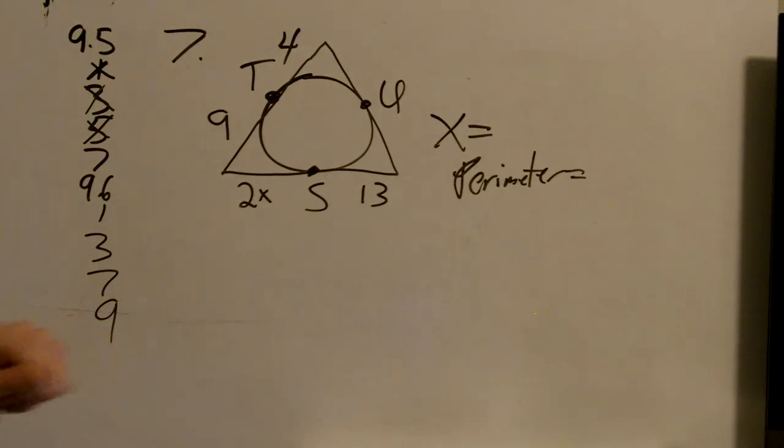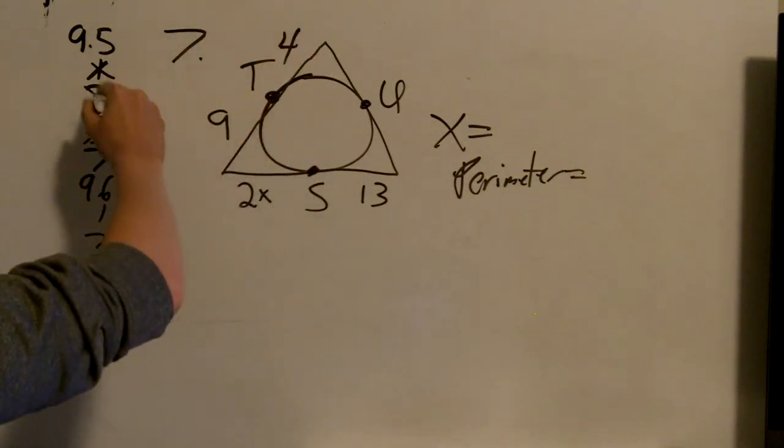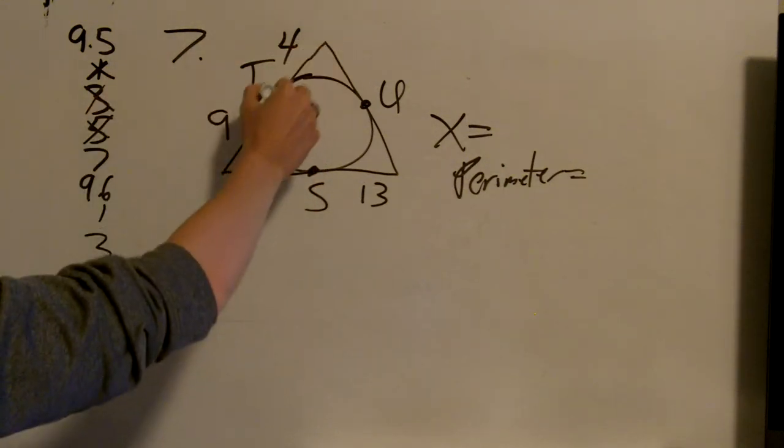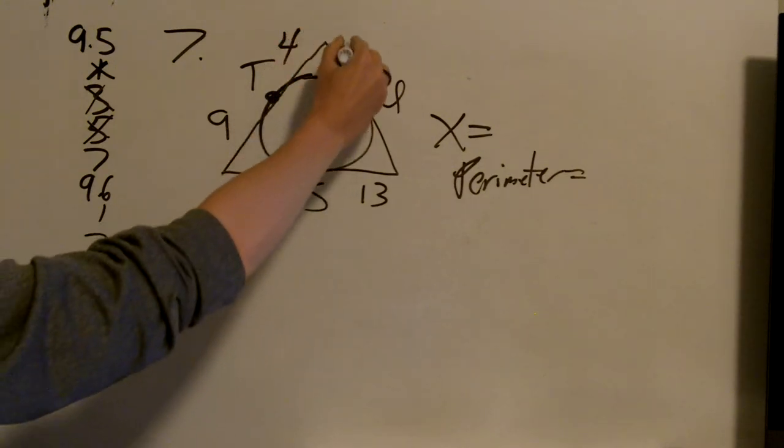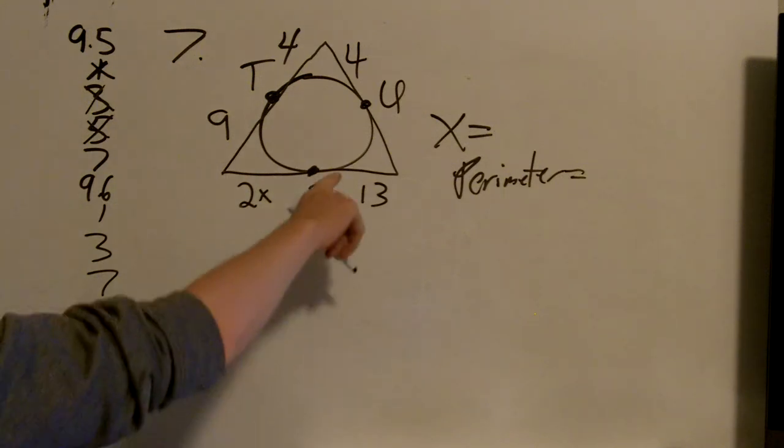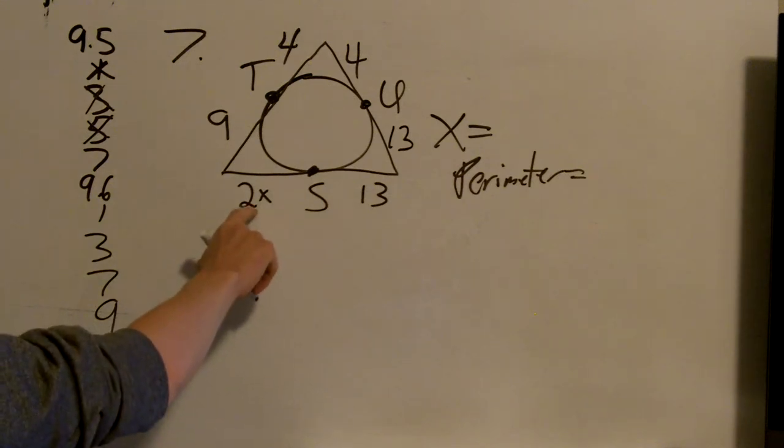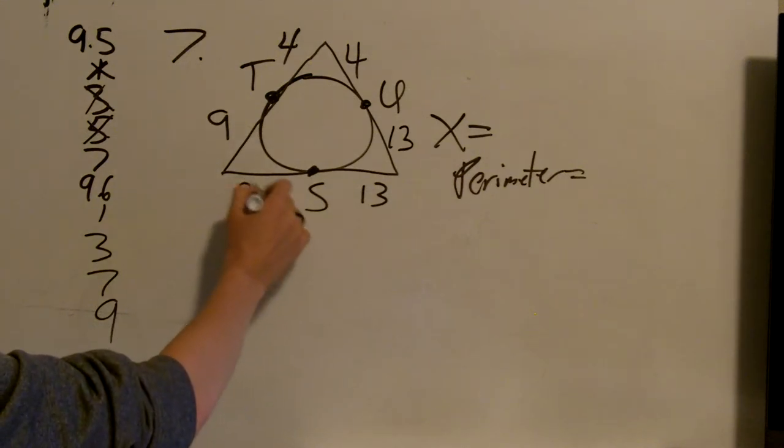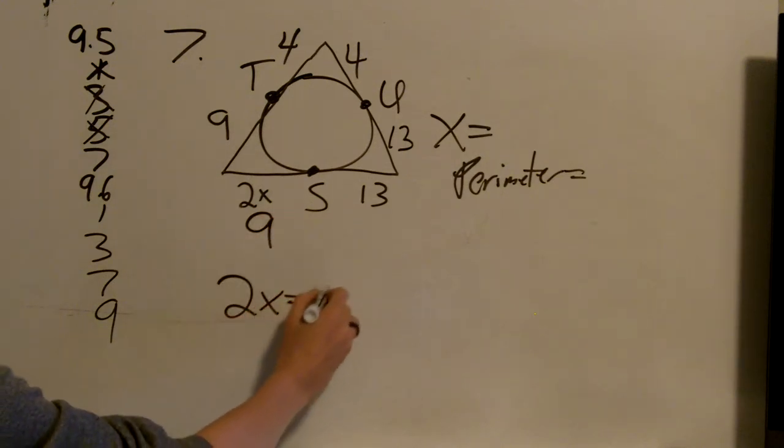First thing, I'm going to fill in as many blanks as I can. Just like in number 3, since these two lines are tangent to the same circle and go to the same point, that means they have to be equal. So that is also 4. Works the same way for this. That means that is 13. That means this right here is going to be 9. So I know 2x equals 9.